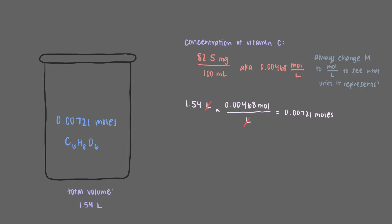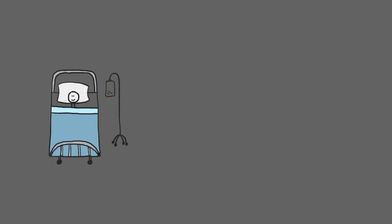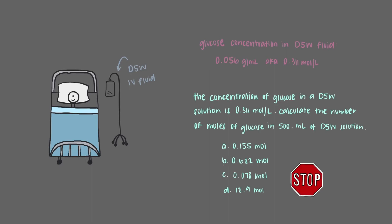You'll notice that when we're given the concentration in moles per liter, it only takes us one step to calculate the number of moles of solute in the solution. Now let's think back to one of the examples in the last video. We calculated the number of moles of glucose in a D5W IV fluid when we were given the concentration in grams per milliliter. The concentration of glucose in a D5W solution is 0.311 moles per liter. Calculate the number of moles of glucose in 500 milliliters of D5W solution.